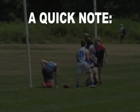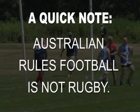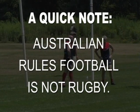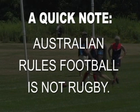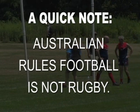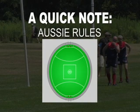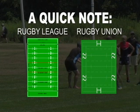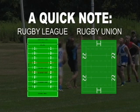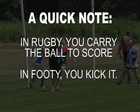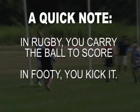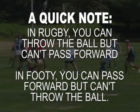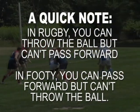A lot of people will see the game being played and assume it's rugby. Australian rules football is not rugby. Though there are similarities — namely in the balls used, the dominance of rugby in some parts of Australia, and some of the physical contests for ball position along the ground — there are major differences between the two games. Footy is played on an oval-shaped field, while both codes of rugby are played on a rectangular, gridiron-style field like those used in American and Canadian football. In rugby, the ultimate goal is to carry the ball over the goal line; in footy, the ultimate goal is to kick it over the goal line. In rugby, you can throw the ball to a teammate, but you can't pass it forward. In footy, you can pass the ball forward, you just can't throw it.